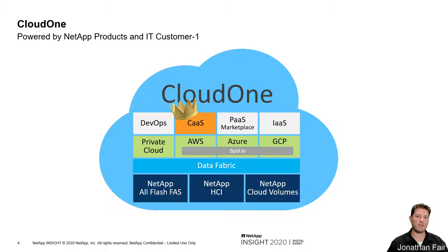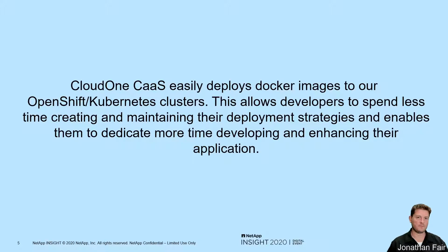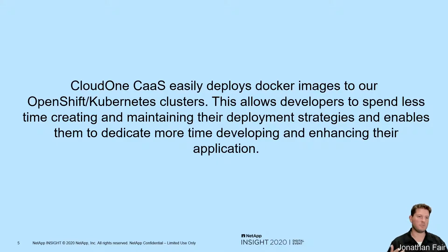Within our Cloud One platform, we have many offerings, including Infrastructure as a Service (IaaS) and Cloud One DevOps. In this presentation, I'll be diving into our CAS offering. CAS provides developers with a predefined template Helm chart and an end-to-end CI/CD pipeline that includes security scans and approvals. This allows developers to spend more time improving their application instead of maintaining and troubleshooting pipelines.